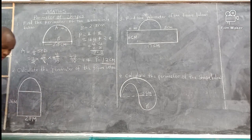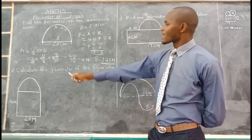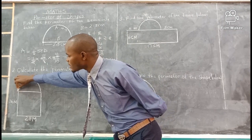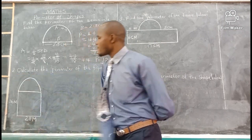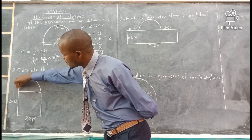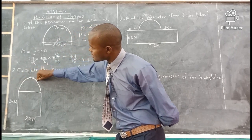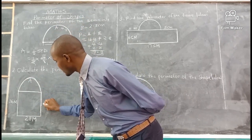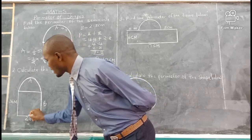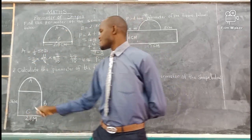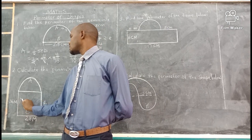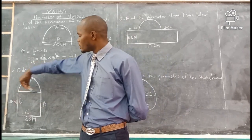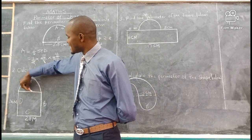Let's go to question number 2: calculate the perimeter of the figure below. This is our figure. If you want to run around this figure, you start from this point. You cover this distance, name it A. Then you add this one, name it B. Then add C, then D. Remember when you are running around a figure to get the perimeter, you don't add the inner lines.